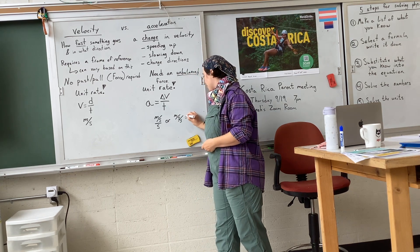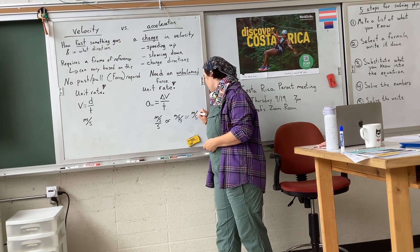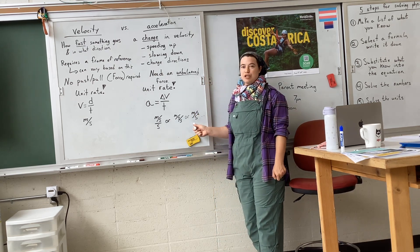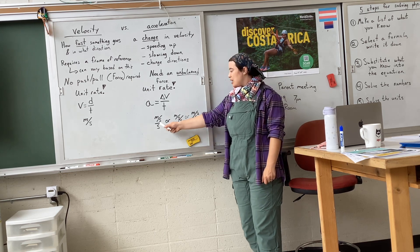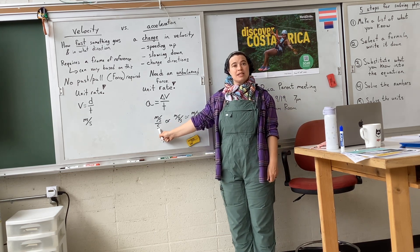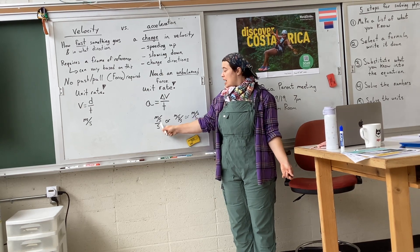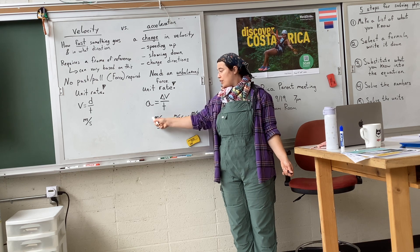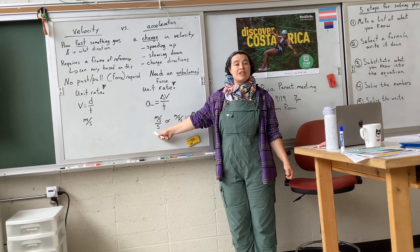There are a couple of ways to write that. Oftentimes, especially in high school or college classrooms, you'll see this written as meters per second squared. I actually prefer to write it as meters per second per second, because I want you to remember that what you have is a change in velocity — meters per second is our velocity unit — per unit of time.